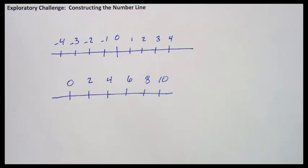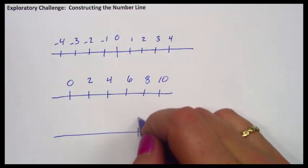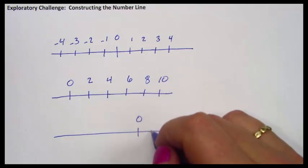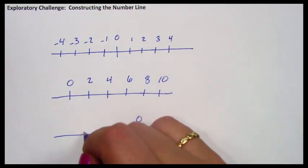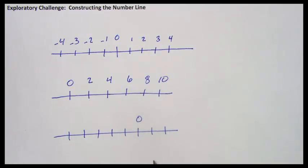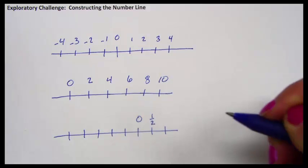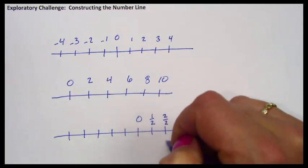I could even count by a number less than one. If I wanted to, I could count by halves. I've put zero over here on the right, and I've made a couple of marks. If I were counting by halves, my first mark would be one half. My second mark would be two halves, which is the same as one whole.